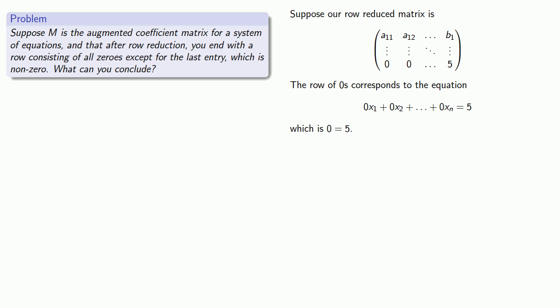Unless you're bragging about the number of people who came to your party, 0 is not equal to 5. This is impossible, which tells us that our original system of equations has no solution.